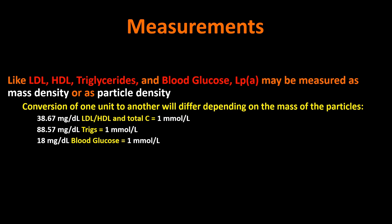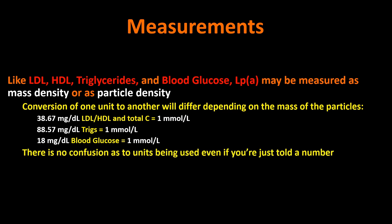There are different conversion factors for LDL and HDL versus trigs versus blood glucose. One of the things we really don't have to worry about is confusing the units. If you tell me your total cholesterol is 200, I know you must be talking milligrams per deciliter because 200 millimoles per liter makes no sense. Similarly, if you tell me your cholesterol level is 5 or 6, I know you're talking millimoles per liter because 5 or 6 milligrams per deciliter doesn't indicate a living human being. So there's no confusion there.